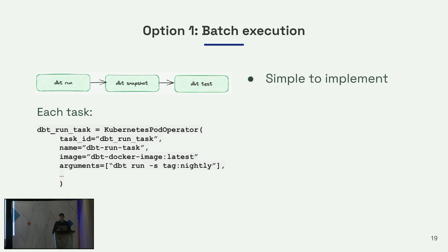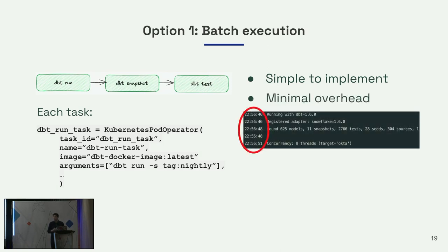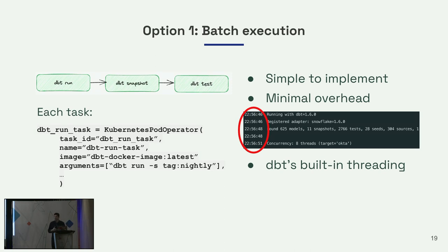Batch execution is really simple to implement — you just need a few tasks, especially when paired with proactive orchestration. There's also minimal overhead because DBT has a little startup time, Airflow tasks have a little startup time, Kubernetes has a little startup time, so with fewer tasks there's less overhead overall. You also get to leverage DBT's built-in threading — DBT is essentially an orchestrator for concurrent workloads sent to your warehouse, so by setting it up in batch mode you let DBT handle the concurrency. And it's resource efficient: with fewer tasks there's less CPU overhead, less memory requirements, and less burden on your web server.